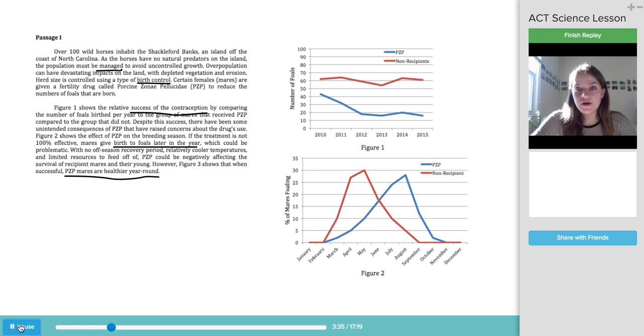So the next thing now, look at the figures. And the key thing about the figures is just to see trends and get the main message. So here in figure one, we were already told that this is going to be our success of contraception. So you can see the axes of number of foals per year. So in 2010, this is how many foals were born to the group PZP. So these are the female horses that were given the drug, and these were the females that didn't receive the drug, so non-recipients. And overall, you can just see that over time, the females that received the drug gave birth to fewer foals, which was to be expected for birth control.